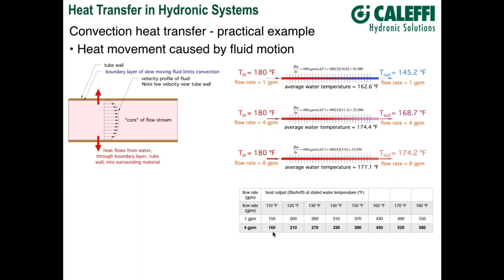Higher flow rates produce higher heat transfer coefficients, producing better convection. Going from 150 to 160 BTUs at 1 GPM versus 550 to 580 at 4 GPM — that's a small increase of about 6 to 7 percent, which is good. But four GPM versus one GPM requires much higher pumping power. So it's a trade-off between flow rate, pumping power, and heat transfer.